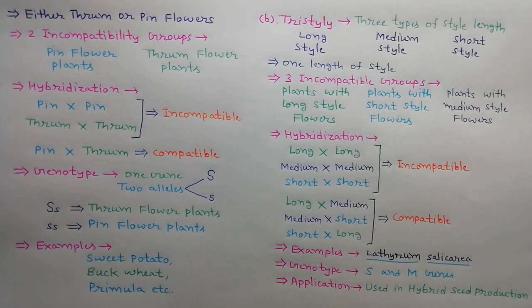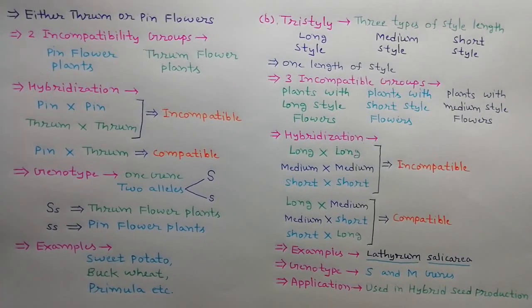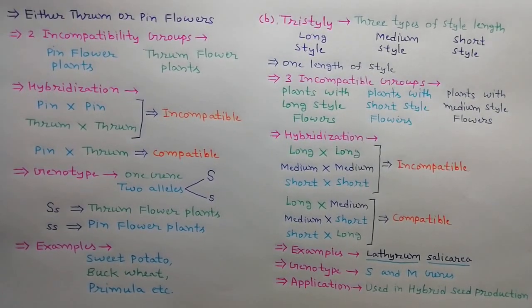Self incompatibility is used in hybrid seed production. Two self incompatible inbred lines are grown in alternate rows, and the seeds obtained will be hybrid.